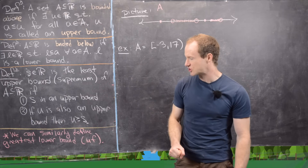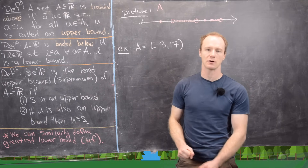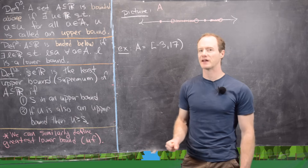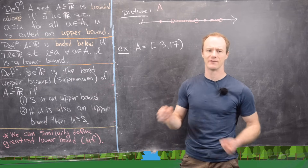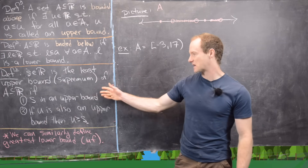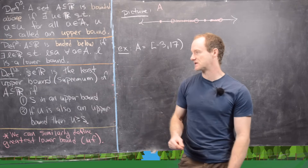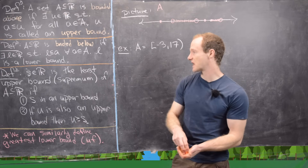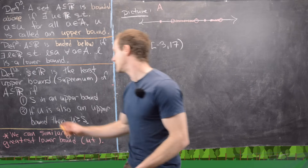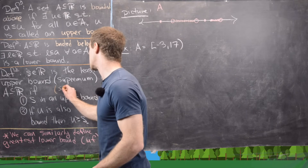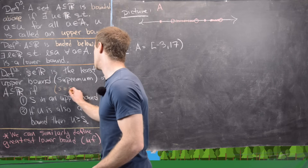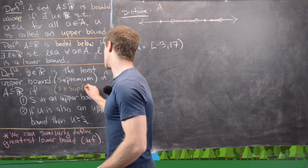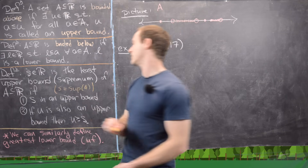We can have a similar definition for greatest lower bound, and it's a good exercise to write that down as a companion yourself. In this case, we would generally write S equals sup A, meaning the supremum of A.